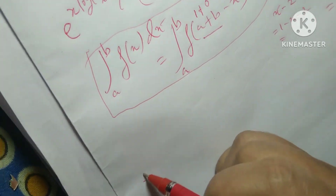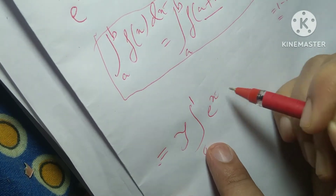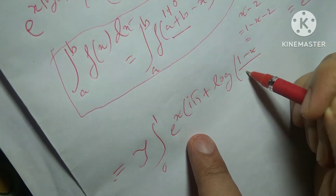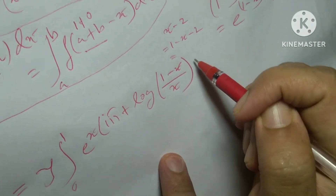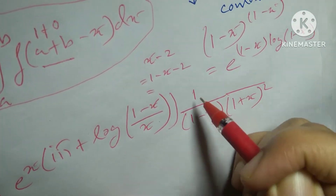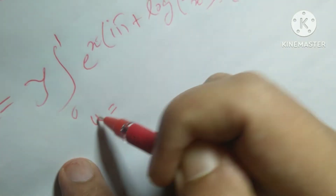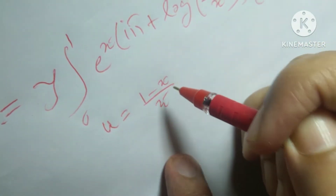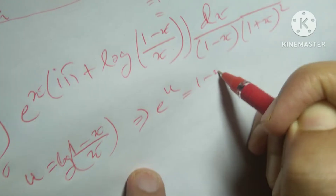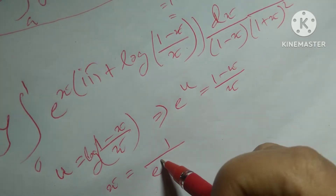Whatever you see, it can be written as the imaginary part of the integral from 0 to 1 of e to the power (iπ + log((1 − x)/x)) divided by x · (1 − x) · (1 + x)⁴, times dx. Now put u = log((1 − x)/x), so that e to the power u = (1 − x)/x, and x = 1/(e^u + 1).